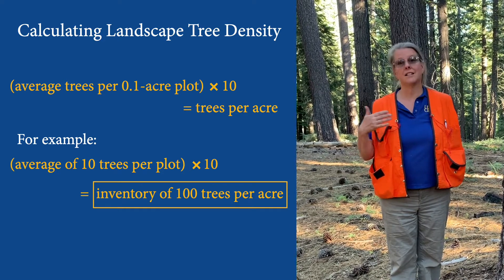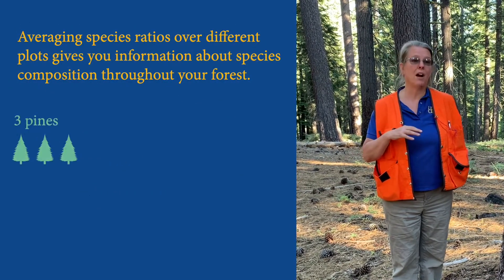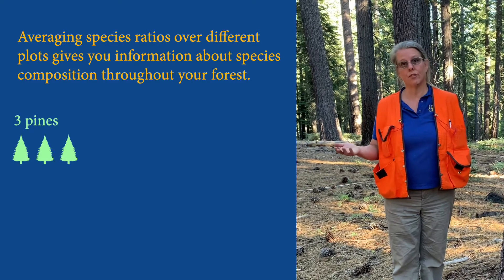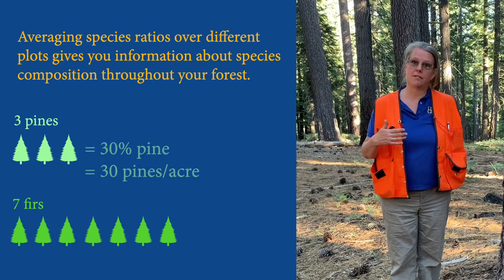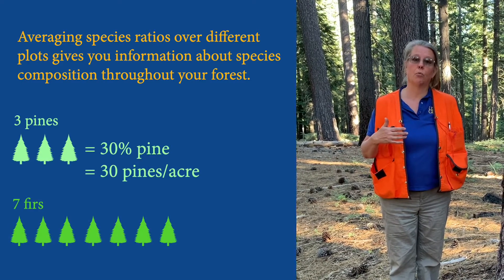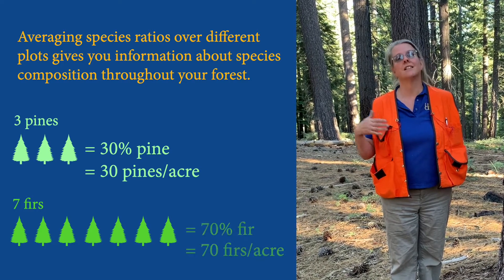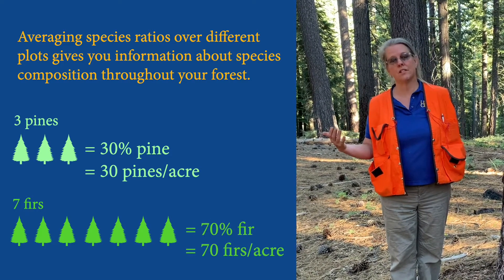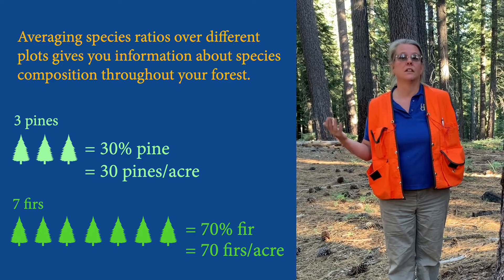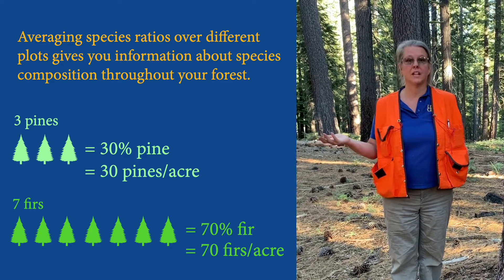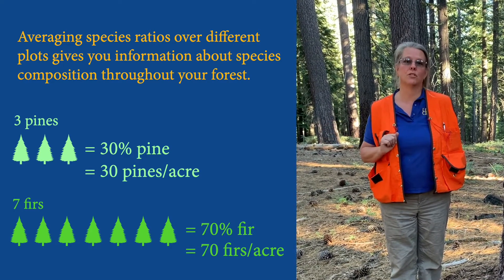If I had the same proportion — say three pines and seven firs — then I would say that 30% of the inventory was pine, or 30 trees per acre, and 70%, or 70 trees per acre, was fir. That's what I would understand as the outcome of my inventory.